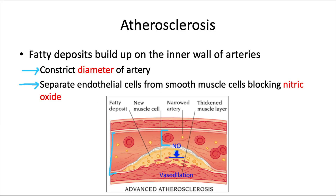Secondly, lipid plaques physically separate endothelial cells from smooth muscle cells, so nitric oxide — not nitrous oxide, but nitric oxide — which is a natural vasodilator, can no longer reach the smooth muscle cells. This means vasodilation is physiologically blocked, creating a double whammy for vasoconstriction. Constricting those vessels increases pressure on the blood vessels and ultimately the heart, raising the risk for a cardiac event.